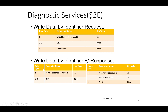When it comes to the response, as per the UDS standard, 0x40 gets added to 2E, so it will be 6E followed by the two bytes of the DID number specified in the request — that is the positive response. Regarding the negative response, it will be 7F, that is the negative response ID, followed by the Write Data By Identifier service ID 2E, followed by the NRC — for example 13, 22, etc.